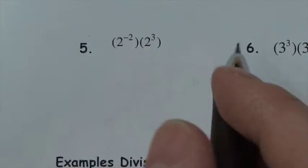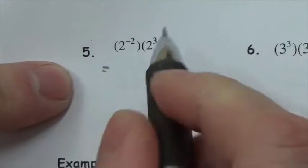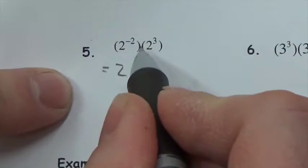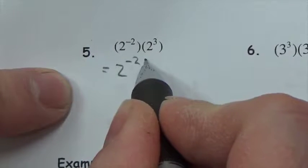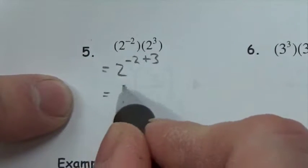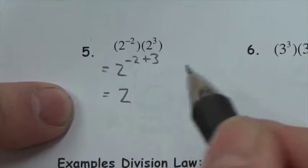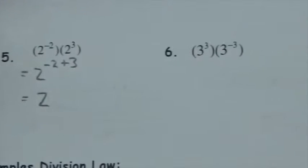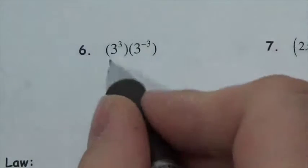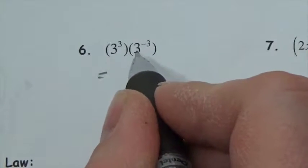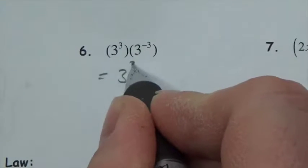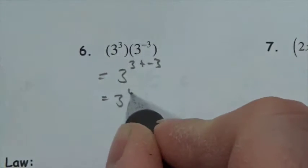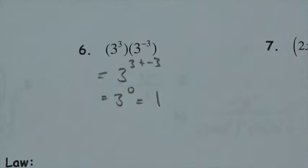Two to the negative two multiplied by two cubed: I add the exponents — negative two plus three equals one — giving two to the first, which I can just write as two. Then three cubed multiplied by three to the negative three: three plus negative three equals zero, and we've already seen that anything to the zero is one.